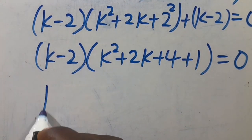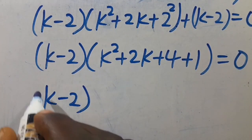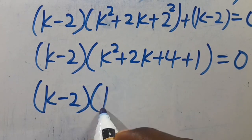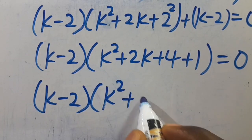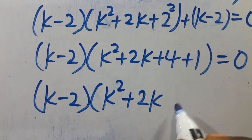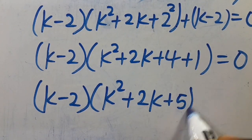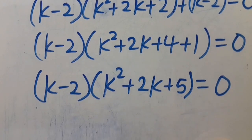So from here we have k minus 2, in parentheses, multiplied by k squared plus 2k — and 4 plus 1 gives us 5 — so k squared plus 2k plus 5, and we set everything equal to 0.